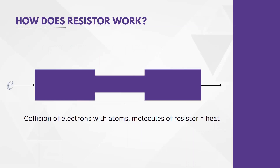Let us understand how it behaves. The analogy I have taken here is a pipe of some width and at some point the width has been reduced. The E represents electrons. Let us just imagine that water flows through this pipe. Here the flow will be normal, and here also the flow will be normal. But here, since the width of the pipe is reduced, the flow of water will not be as fast. Which means for that time, there is some kind of opposition happening because of the width of the pipe. Similarly, if we consider this to be a resistor, the material which it is made up of will have some atoms and molecules. When electrons flow through that component, it will bombard or collide with these atoms and molecules, which will hinder its movement through the resistor, and that is how it slows down the flow of electrons, which in turn will limit the amount of current flowing.